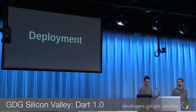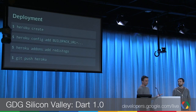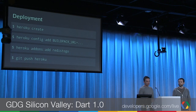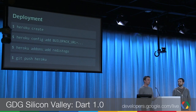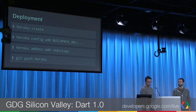Deployment. This is so simple we don't have a lot to say about it. Heroku is a great option. This is literally what it took to get this running on Heroku: 'heroku create', then a command giving it the URL to a buildpack — essentially instructions to create a virtual machine on the fly. Then 'heroku addons' to add a Redis data store — within seconds we had a Redis database — and then 'git push'. If you're just getting started with Dart and building a cool app you want to show people, definitely try Heroku. Google the Dart buildpack for more detailed instructions.